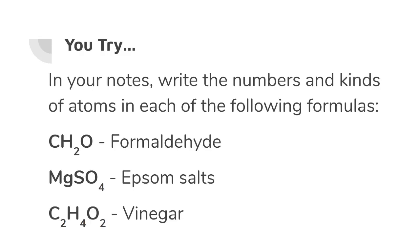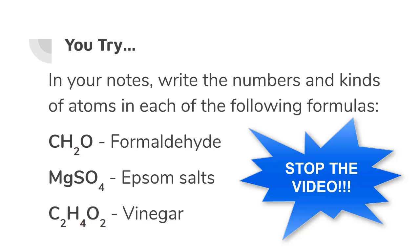Okay, you're going to get some practice now. I want you to write these down in your notes. We have CH2O, that's formaldehyde. We have MgSO4, that's Epsom salts, if you've ever taken an Epsom salts bath. And then we have C2H4O2, which is acetic acid or vinegar. I want you to write them down, and I want you to tell me what atoms are in there, what kinds of elements, and how many of each atom there are. Go ahead and pause the video, and we'll come back.